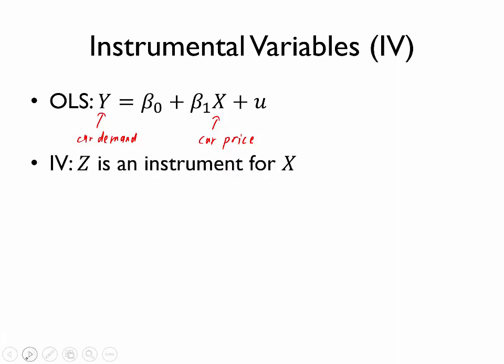Our solution to this problem was to use instrumental variables. We proposed to use z as an instrument for x, and we proposed as the instrument to use the price of steel. The idea is that the price of steel was both relevant — meaning it is related to the endogenous independent variable car price because it's part of the production process — but we also argued that it is exogenous, meaning we don't think it is likely to have a direct effect on car demand. We think it only affects car demand through its effect on car price.